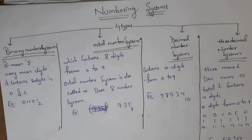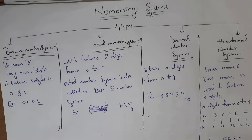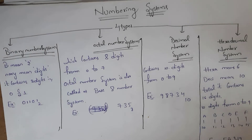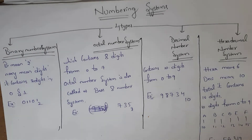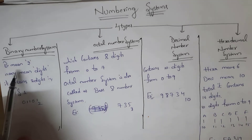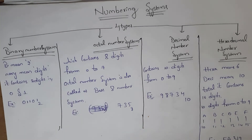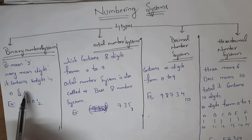Let's get started. The numbering system is classified into four types: first is the binary number system, second is the octal number system, third is the decimal number system, and fourth is the hexadecimal number system. The binary number system — 'bi' meaning two — contains two digits.